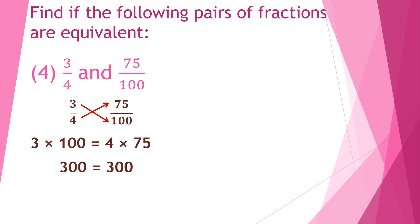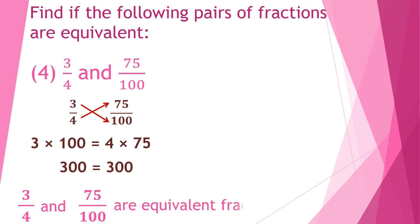Since the left hand side and right hand side are equal, we can say that 3 upon 4 and 75 upon 100 are equivalent fractions.